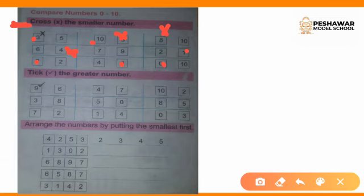9 and 6: 9 is larger than 6, so we will tick on the 9. Then 4 and 7: 7 is larger than 4, so we will tick on the 7. Next, 10 and 2: 10 is larger than 2, so we will tick on the 10.